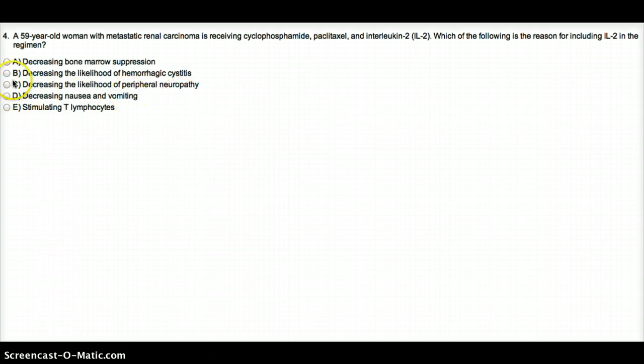Now, let's look at the options. A says decreasing bone marrow suppression. That has nothing to do with IL-2. Decreasing the likelihood of hemorrhagic cystitis. Irrelevant.